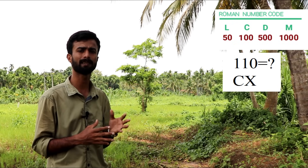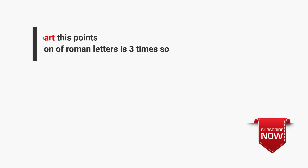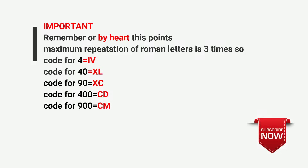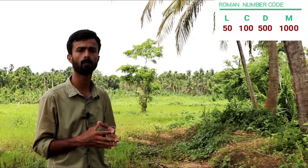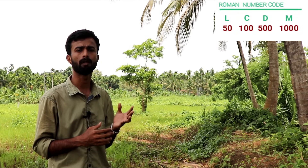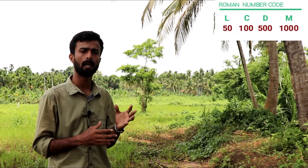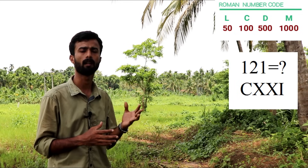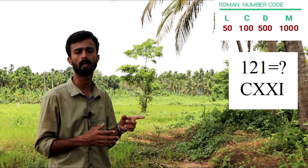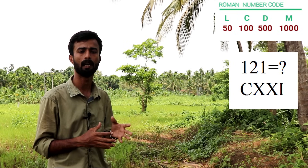We can go to 110 — that is C and X, so CX. Let's look at 121: 121 is 100 plus 21, so C is 100 — giving us CXXI.